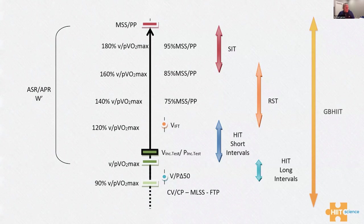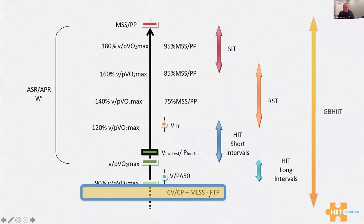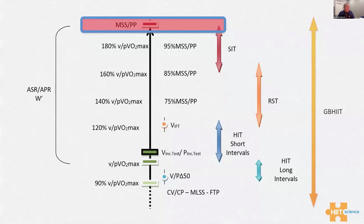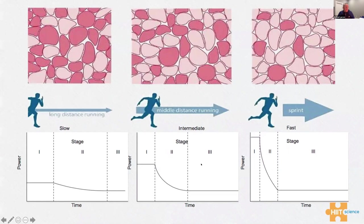Starting with intensity: any interval training session can be quantified. They're all above your critical velocity, critical power, maximal lactate steady state, or functional threshold power. We can have long intervals, short intervals, and then at higher ranges we've got repeated sprint training and sprint interval training, up to maximal sprinting speed and peak power output. Intensity can be quantified as percentage of VO2 max versus percentage of maximal sprinting speed.